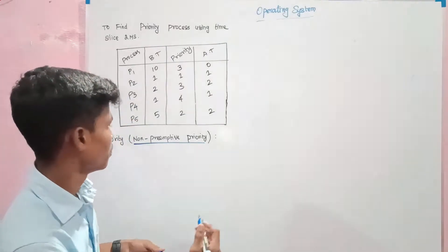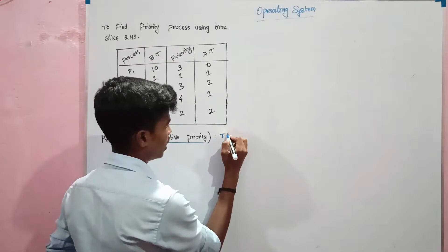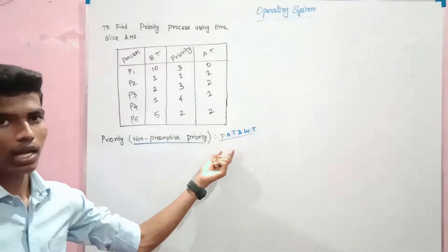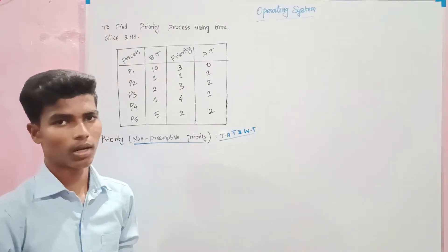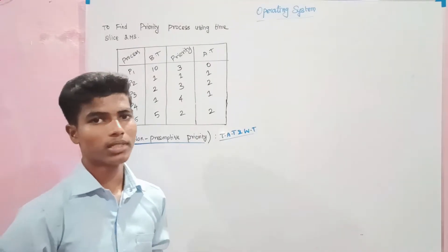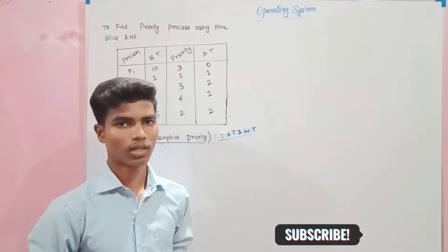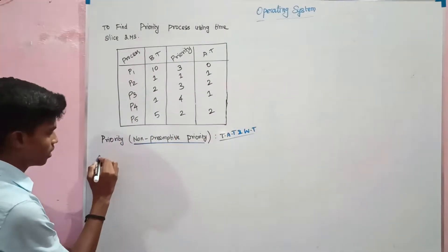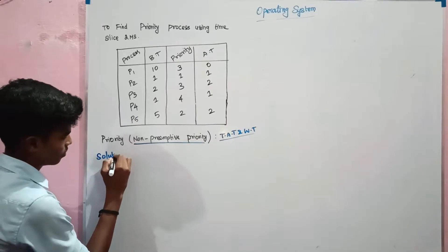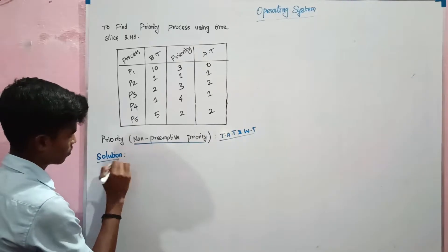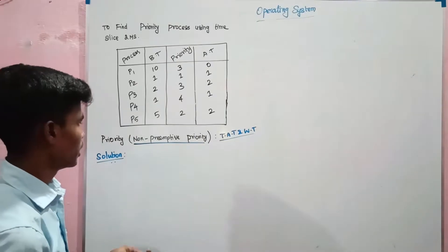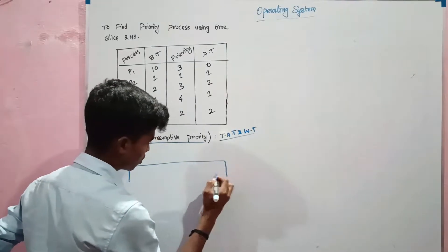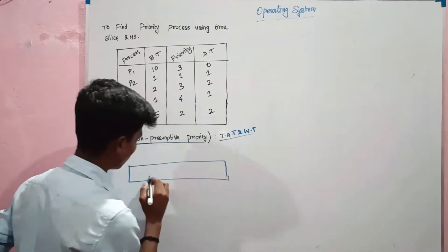That is T, A, T and W — the average turnaround time and waiting time. These are the final parts of the problem. If we solve the problem, subscribe and press the bell icon. Come to the video — solution. If we solve the problem, non-preemptive priority scheduling, same as well as true.